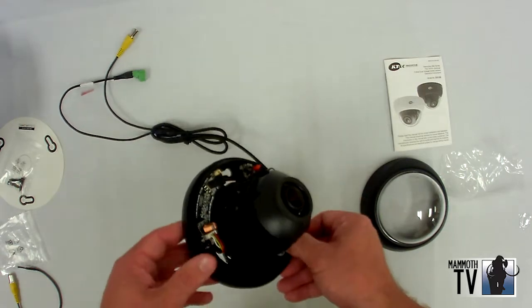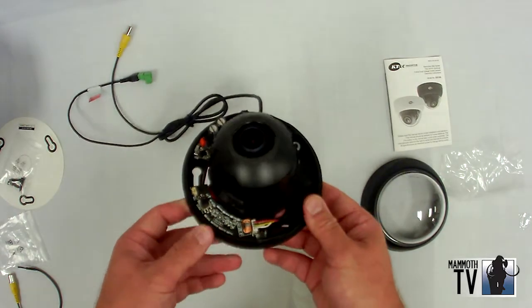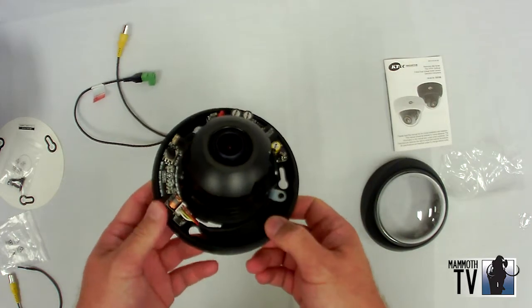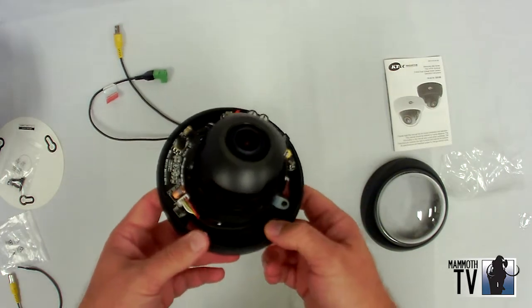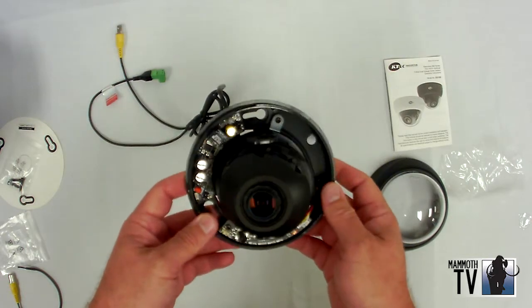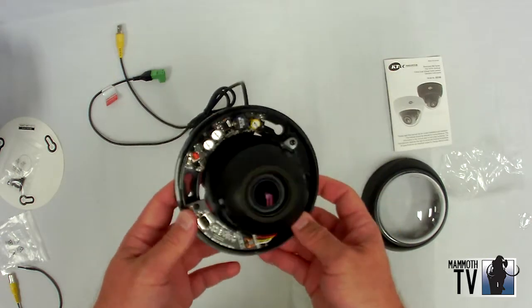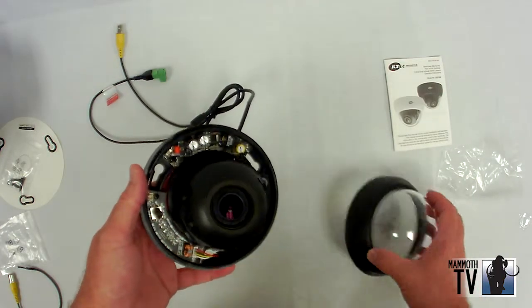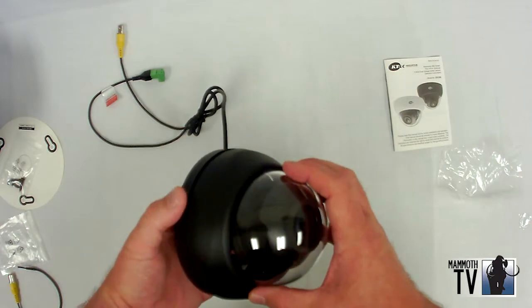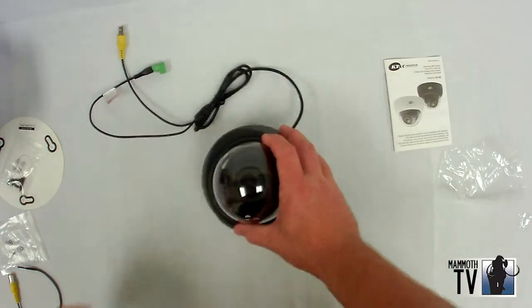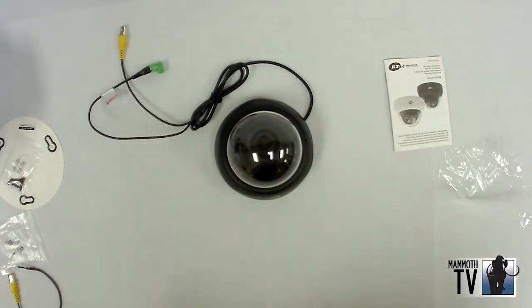Some of the other features of this camera: it goes down to really low lux, so you don't need IRs on it. As long as there's some ambient light, you'll be able to see your images with minimal light. That's why there's no infrared on it. Obviously it's a day-night camera. This is what you get when you buy the KTNC DS100.